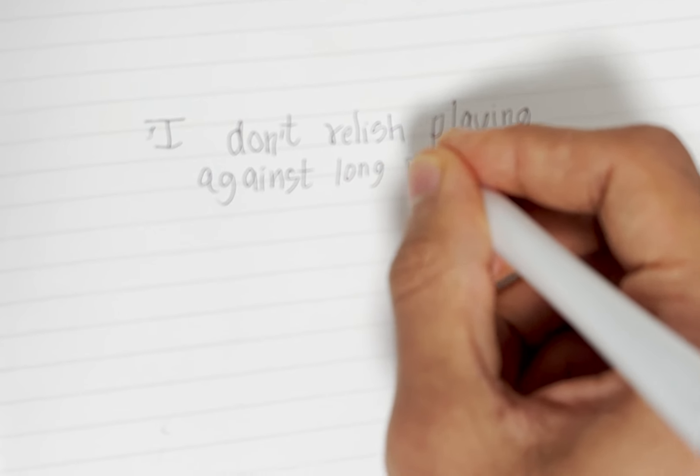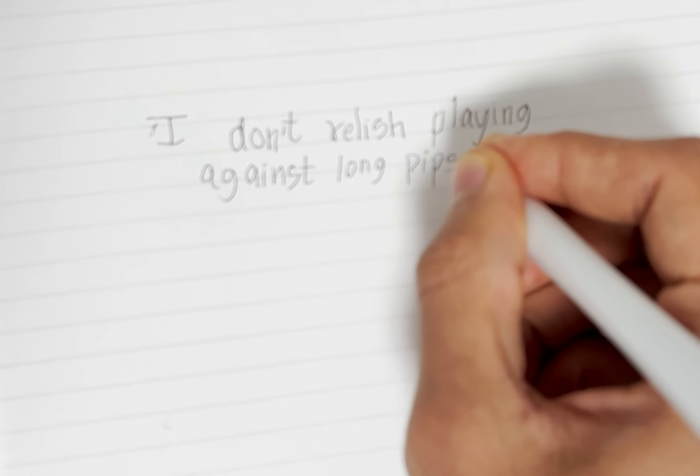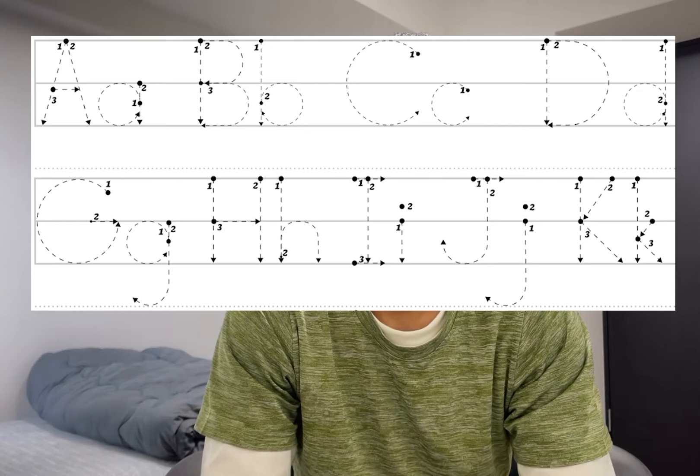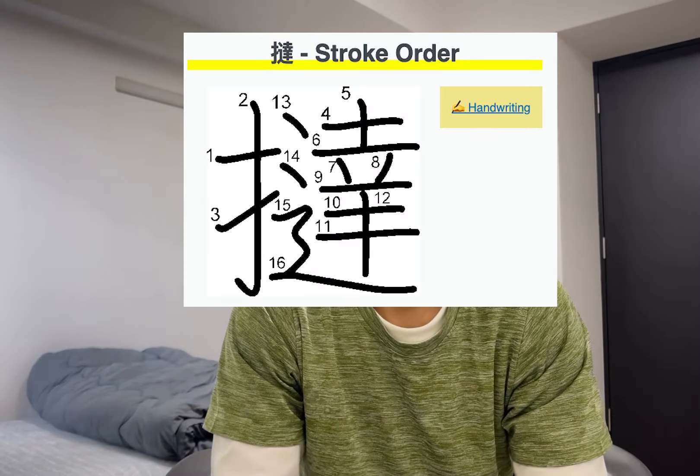To give an analogy, consider something that you do with ease — writing. One could argue that if you know what the letter looks like, then you can write it. But you still spend years learning how to write, because when you're going to be writing pages, then the speed matters. Try writing with your non-dominant hand and you'll see what I mean. And maybe in the English alphabet the stroke order may not seem that important, but there are definitely scripts where it matters.